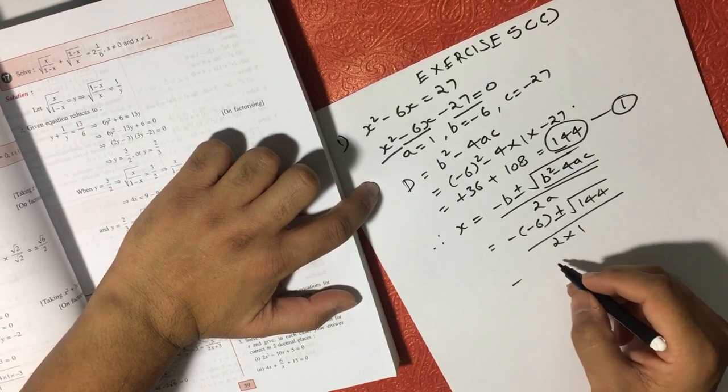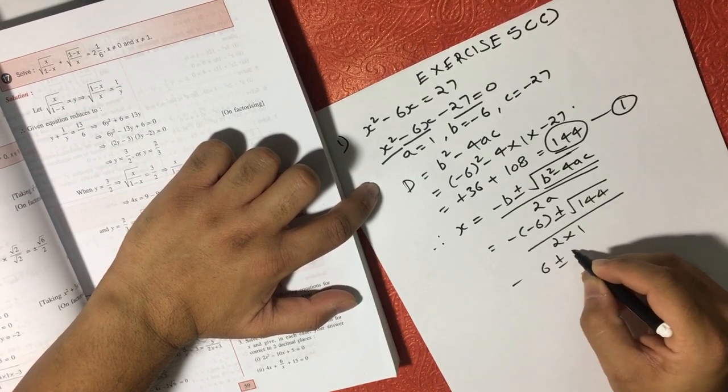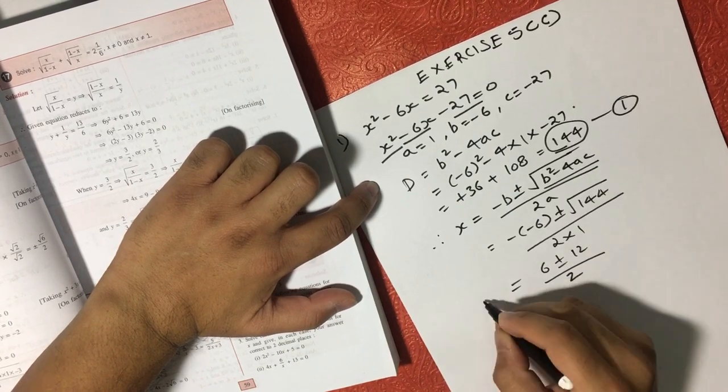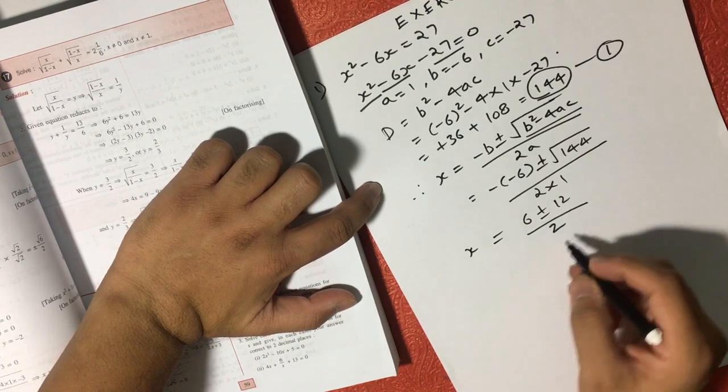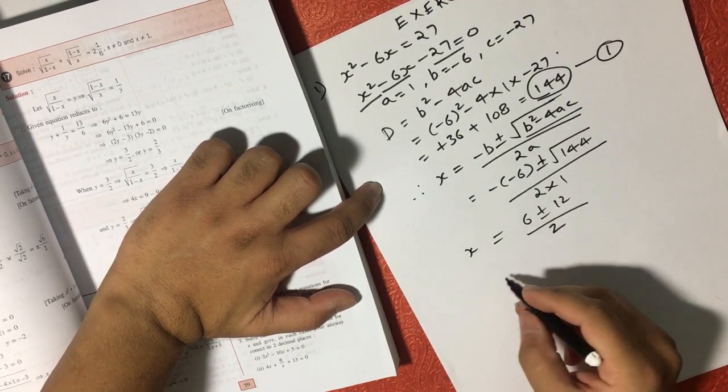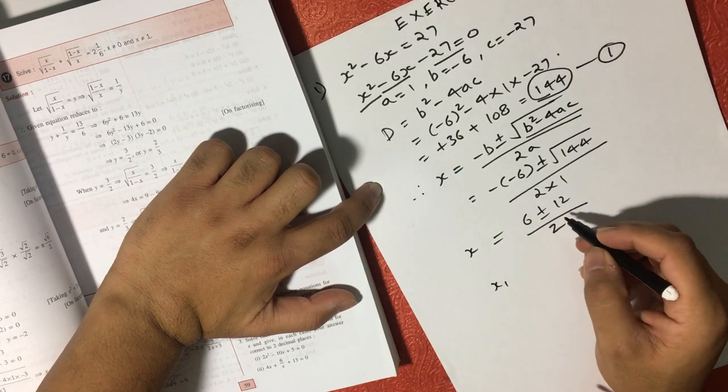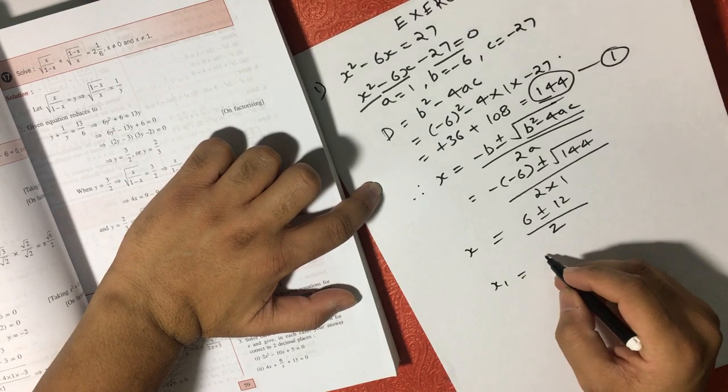Minus times minus becomes 6, square root of 144 is 12, and 2 into 1 is 2. That is the value of x. Now here we can see there will be 2 possible values of x. One is x1 if we consider 6 plus 12, and another will be 6 minus 12. So let's try to solve both.